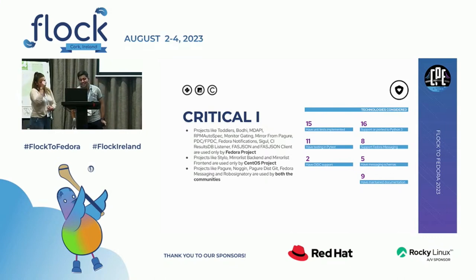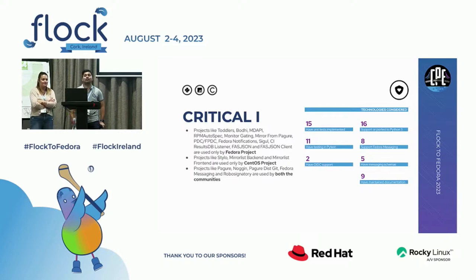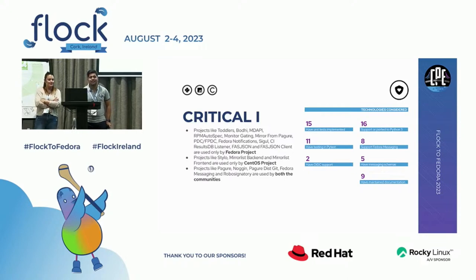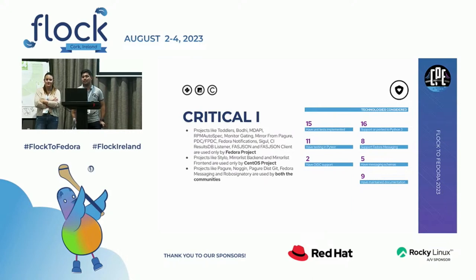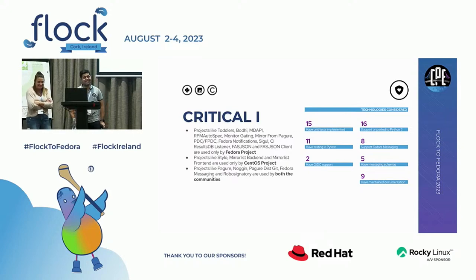We have the list of applications used only by Fedora project, the list used only by CentOS, and those used by both communities. An audience member notes the list includes 'resultsdb-listener' but not 'resultsdb' — fair point, it should probably include both. Koji might actually fall under critical class two — since that's where updates and packages come from.